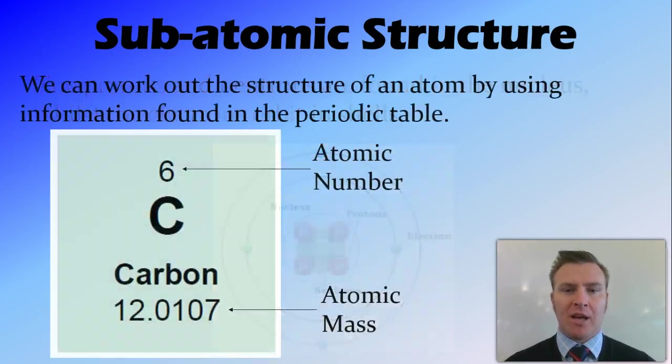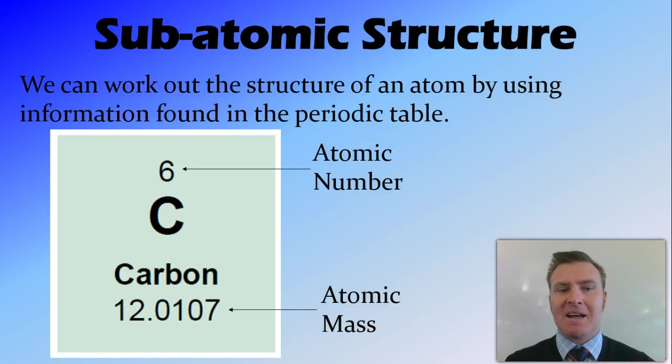But what we'll first look at is the numbers of different things. We can work out the structure or how many different subatomic particles there are by using the information found in the periodic table. In the periodic table, every element or every type of atom has an atomic number, and all the atomic numbers are different, and they go one, two, three, etc. And then they have an atomic mass, and the atomic mass isn't a whole number, it's a weighted average.